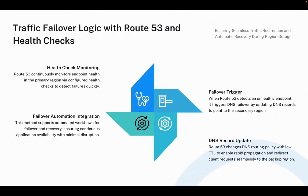Traffic failover is one of the most user-visible components, so it needs to work flawlessly. Route 53 constantly checks the health of the primary endpoint, and once it identifies an issue, it updates DNS records to direct traffic to the healthy environment in the secondary region. When we use a low TTL value, the DNS change propagates quickly and users experience minimal disruption as the system transitions control smoothly to the backup region. All of this ties with automated failover workflows, ensuring that traffic shifts only after the secondary environment is fully prepared.